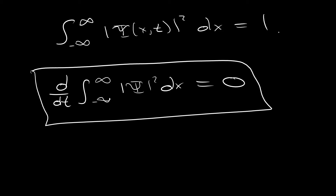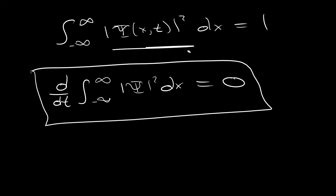It's pretty easy to see that since we have a constant here, just a one, if we take a derivative with respect to time we're going to end up getting zero. But this proof in particular is really important to quantum mechanics because if this condition doesn't hold, we're going to have to renormalize the wave function at every instantaneous change in time. So if we normalize it at zero seconds, at 0.00001 seconds we're going to have to renormalize it again, making normalization completely useless.